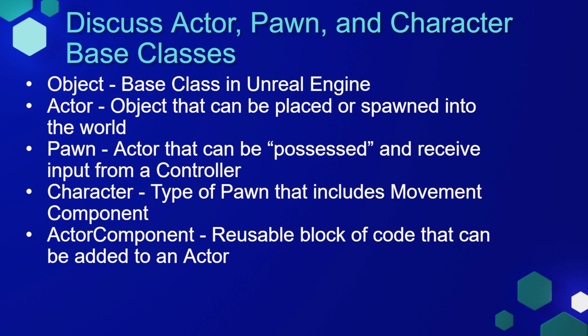In Unreal Engine, there are a few base classes already built into the engine that you'll use commonly — we'll cover more in a future lesson. We have the Object, which is the base class; everything in the engine is an object. We have an Actor, which is an object that can be placed or spawned into the world. We have a Pawn, which is an actor that can be possessed and receive input from a controller. We have a Character, which is a type of pawn that includes a movement component. And a component, or actor component, is a reusable block of code that can be added to an actor.